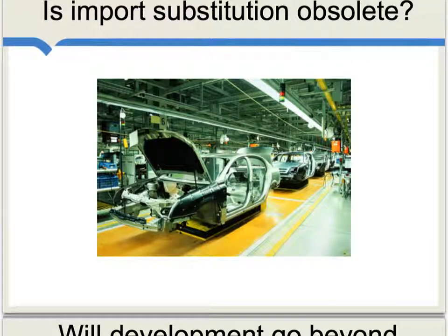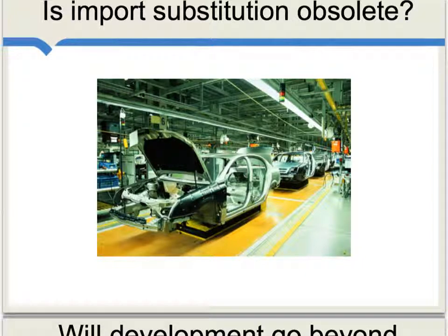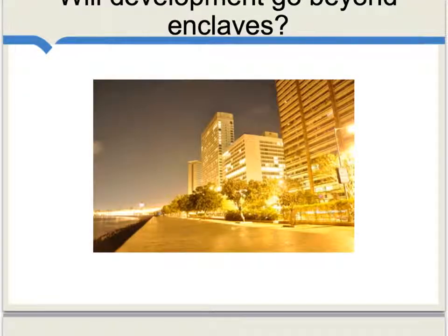In this new model, it may well be that import substitution is obsolete and doesn't have much of a chance of working anymore. A lot of developing nations just aren't going to get that integrated, nationally-contained supply chain anyway. It really is a fundamental question about the future of the world — just how much will economic development go beyond particular enclaves within larger nations?